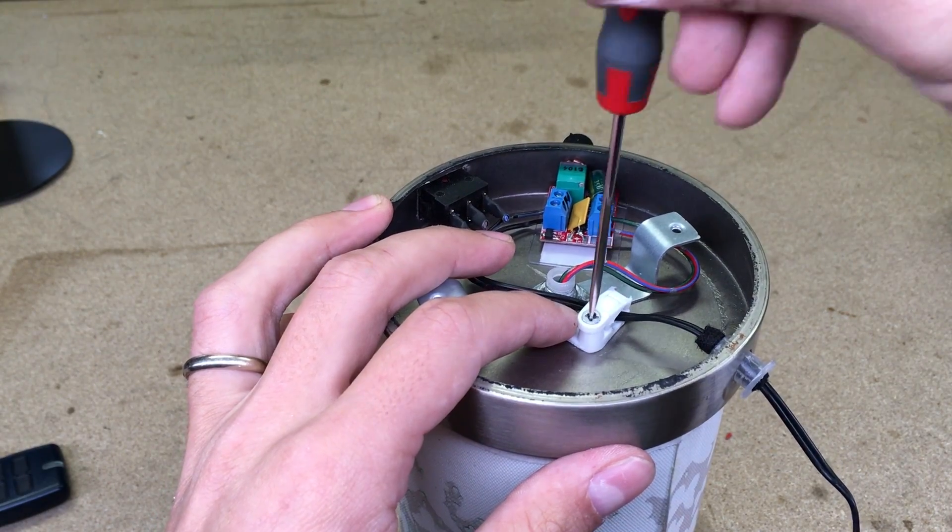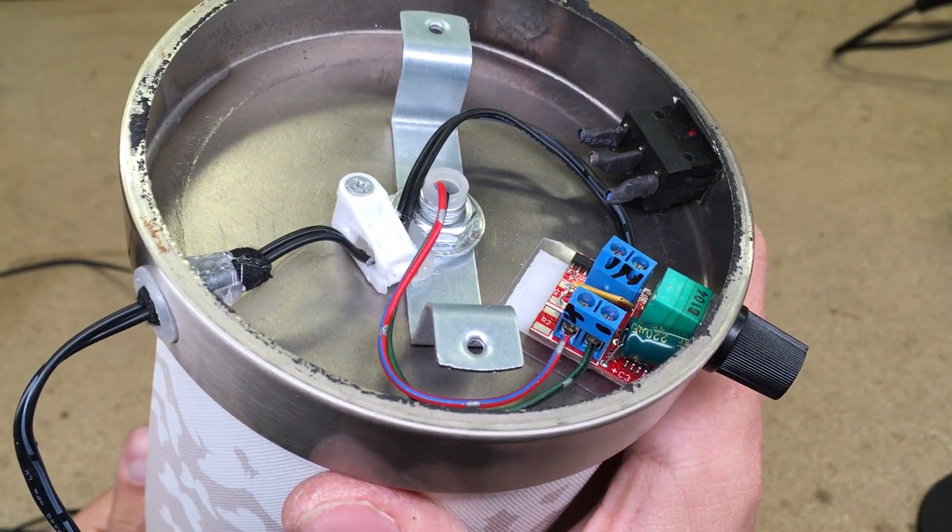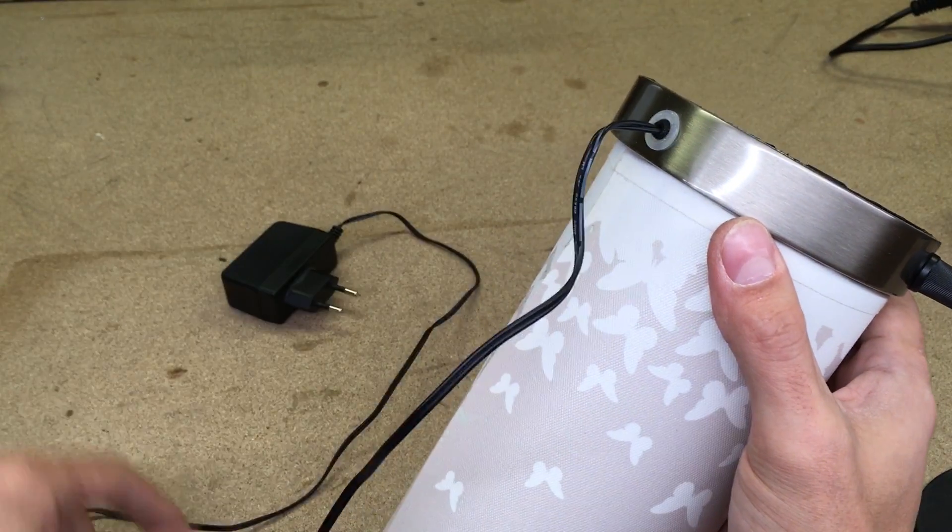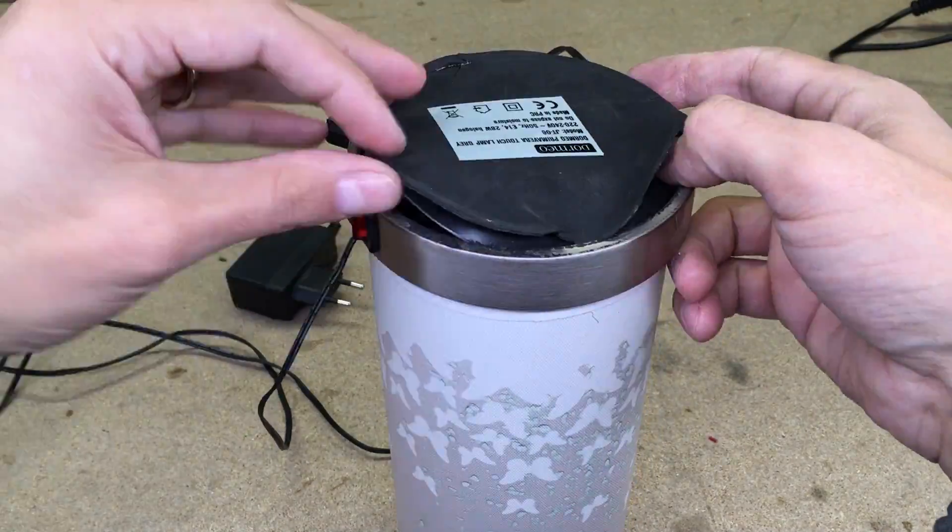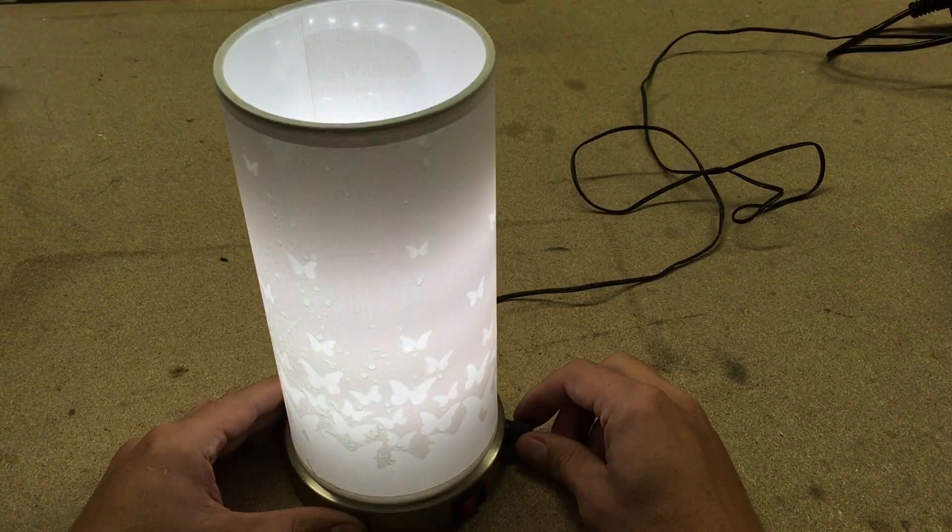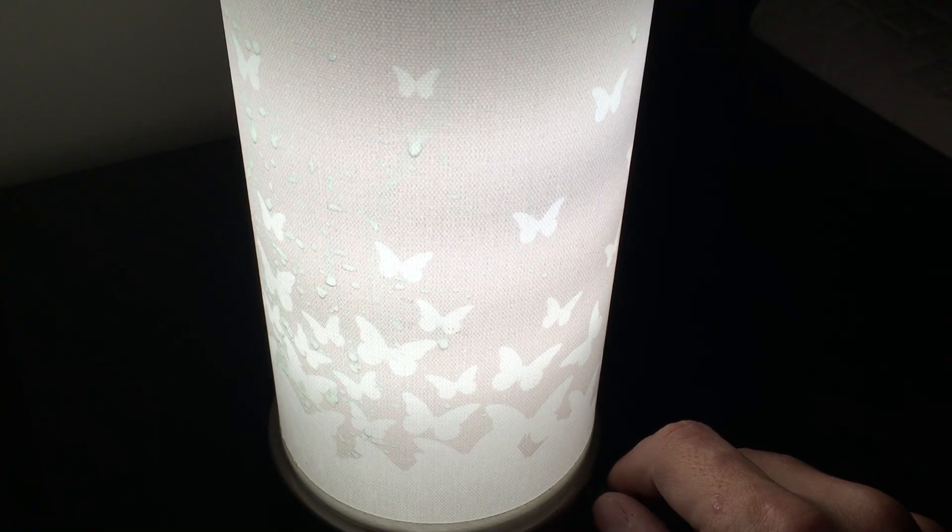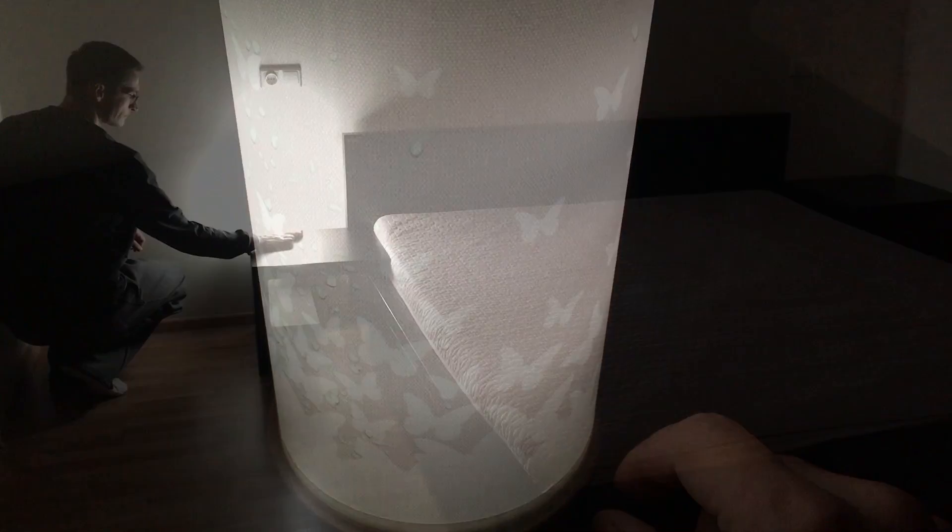And that's it, conversion is done. Sadly, it is very hard to show real dimming in camera, but I think you will get the idea. It came out exactly as it was expected. Lamp can be very dim or very bright, depending on dimmer knob position.